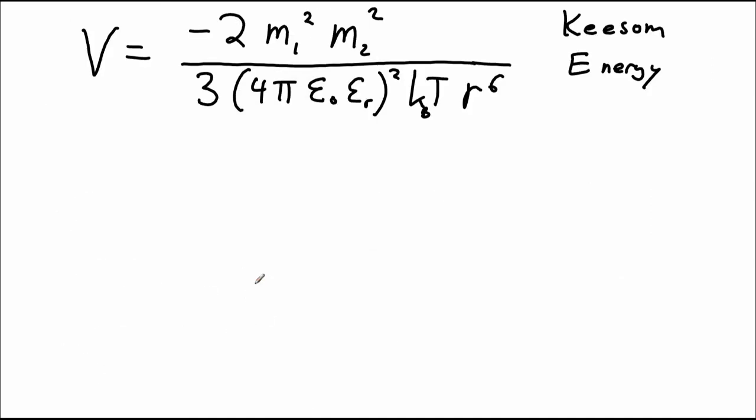Well, in the Keesom interaction, the stronger a dipole moment is, the more it can align the other dipole to be aligned with it, which is going to strengthen the interaction. So it's actually factored in twice, and the same argument can be made for the second dipole.